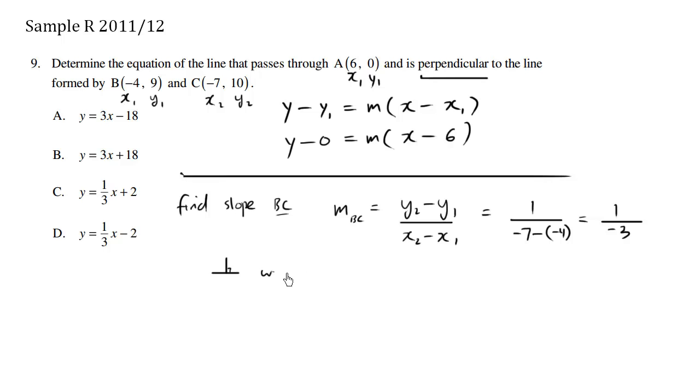So we want the negative reciprocal of this value here, which essentially is you switch the sign. This is a negative, the negative becomes a positive, and you also flip this fraction, which is the reciprocal. So the negative reciprocal of this negative 1/3 is going to be positive 3 over 1. Positive 3 over 1 is essentially 3. So we found the slope we're looking for. m equals 3. We're interested in this m, which is 3.